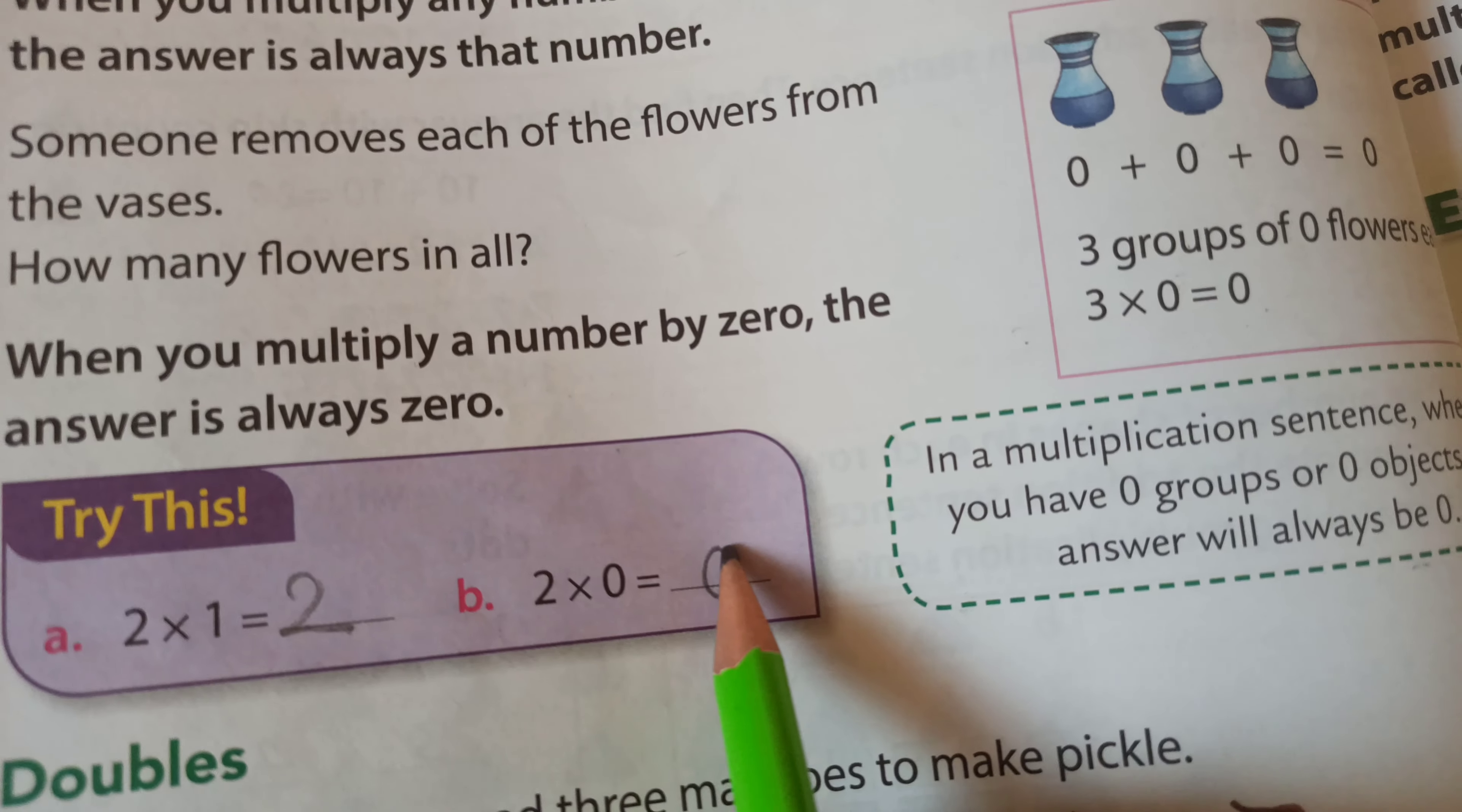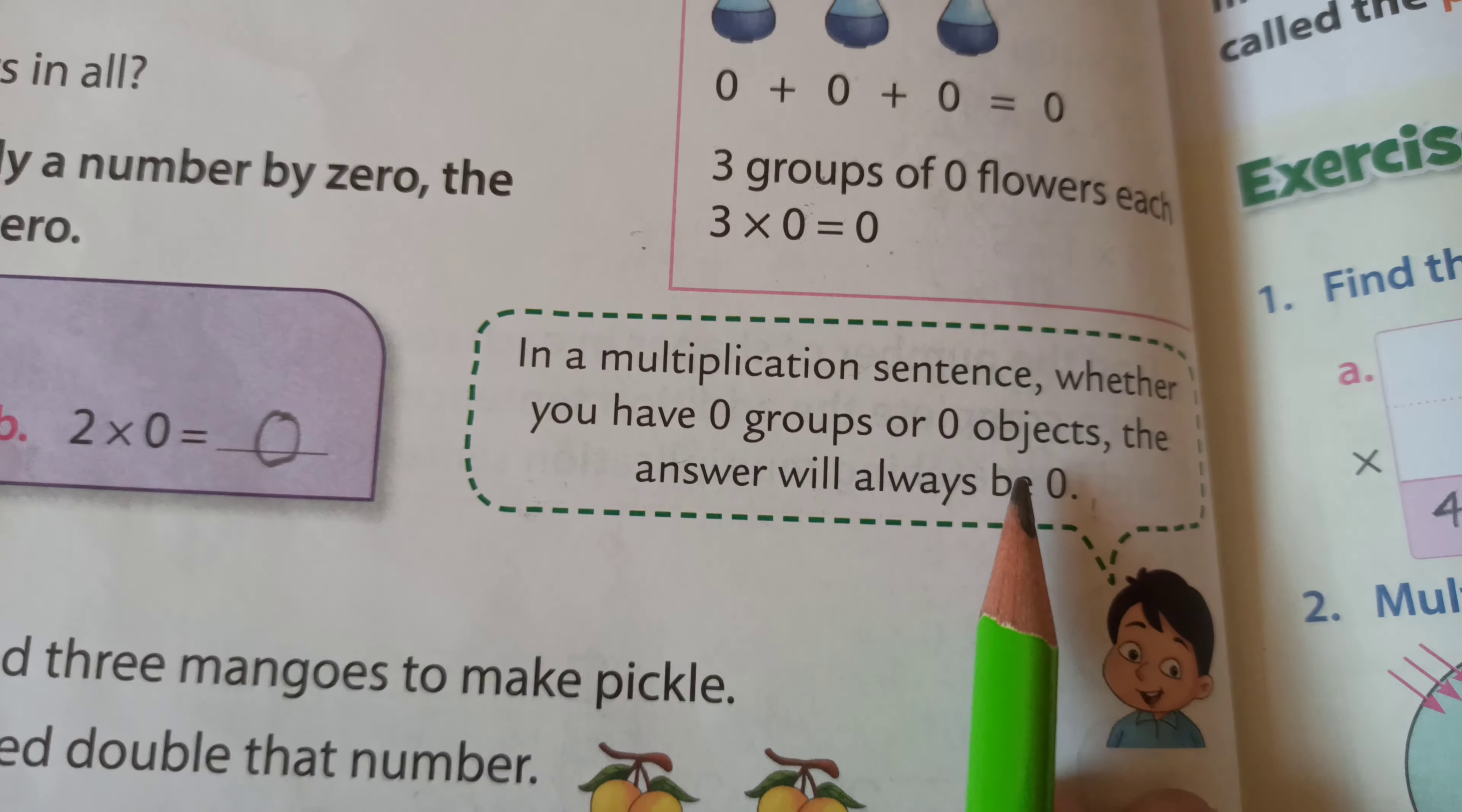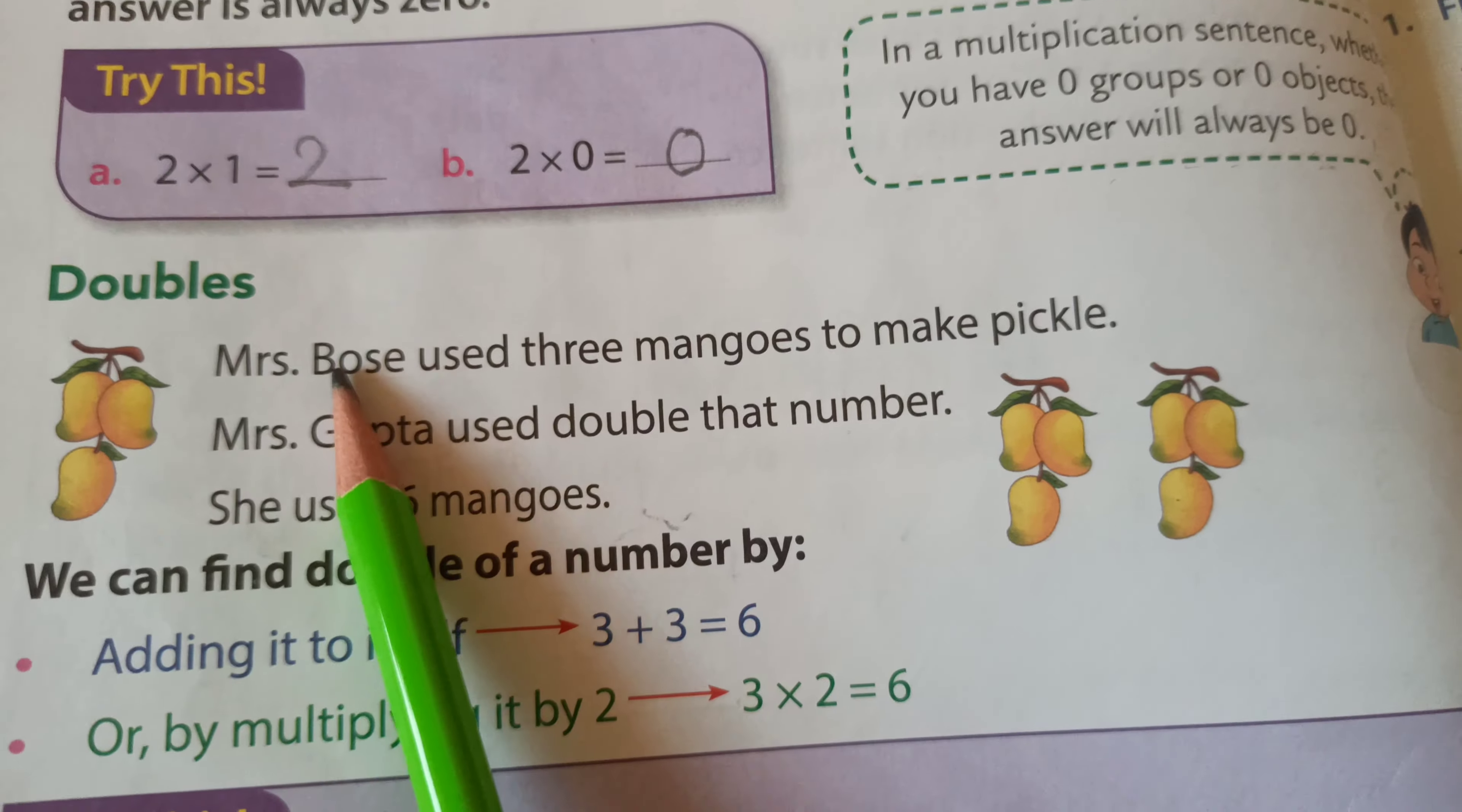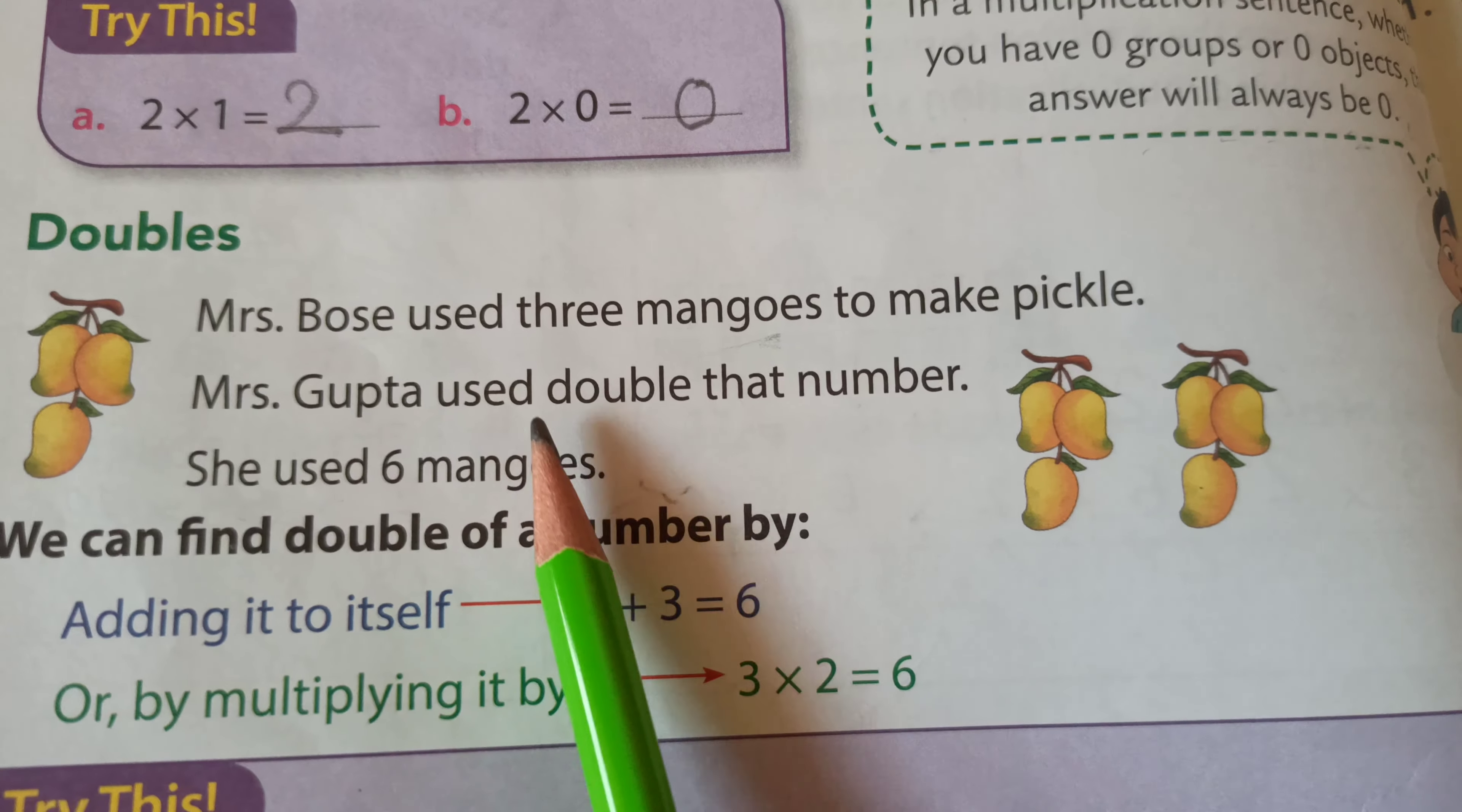See the Try This section. A: 2 ones are 2, so write here 2. And B: 2 multiplied by 0 equals 0. See, this one is very important. In a multiplication sentence, whether you have 0 groups or 0 objects, the answer will always be 0.